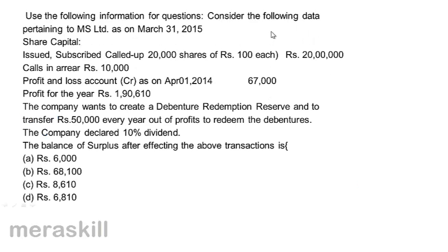Using the following data for MS Limited as on 31st March 2015: issued, subscribed, and called up — 20,000 shares of Rs. 100 each = 20 lakhs; calls in arrears Rs. 10,000; profit and loss account credit Rs. 67,000; profit for the year Rs. 1,96,110. The company wants to create a debenture redemption reserve and transfer Rs. 50,000 every year out of profits. The company declared a dividend of 10%. The balance of surplus is: A. 6,000  B. 68,100  C. 8,610  D. 6,810.